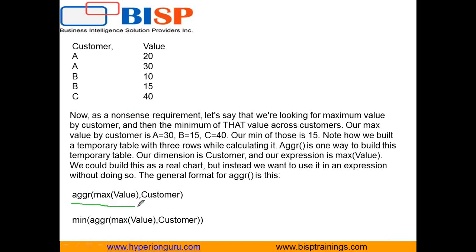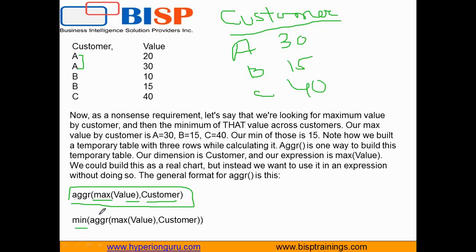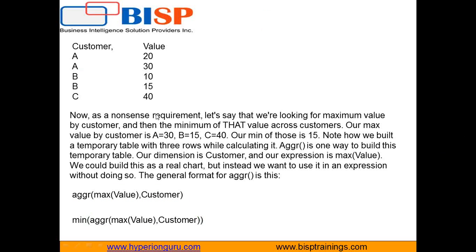The aggregation function is written as: AGGR(Max(Value), Customer). It will find the maximum value based on the customer dimension — customer A gives 30, customer B gives 15, customer C gives 40. Then applying another aggregation on top, we get the minimum value of 15. This is a very basic example; let's now see a real-time example.